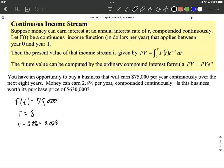Alright, let's try. PV is going to be the integral from 0 to 8 of 75,000 E raised to the negative 0.028 T DT.